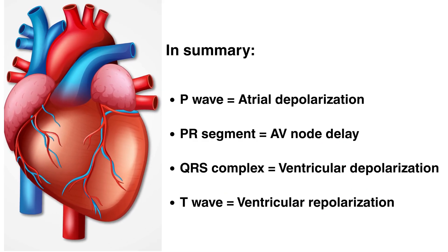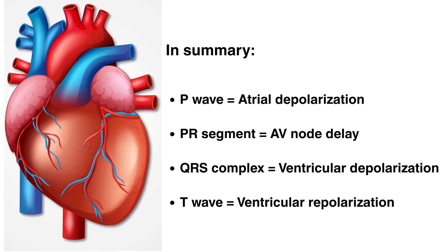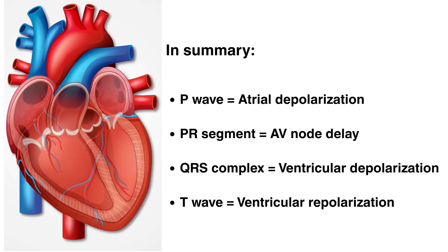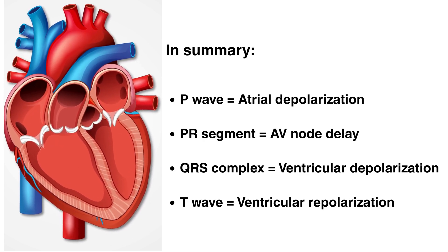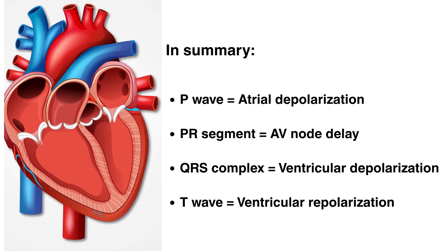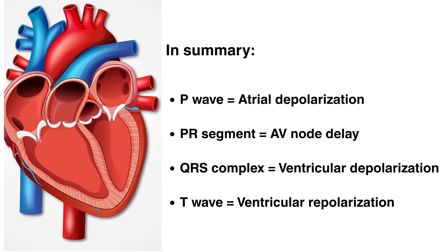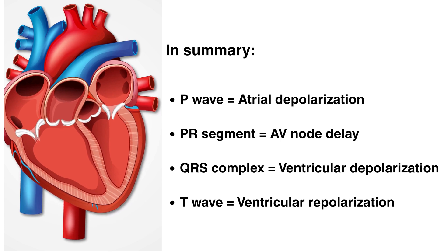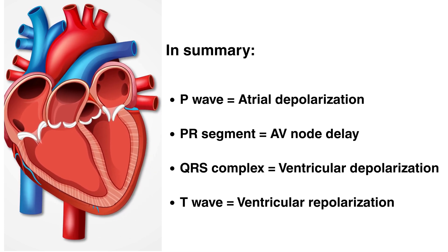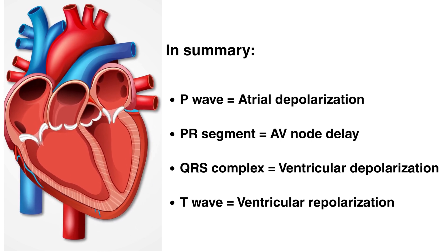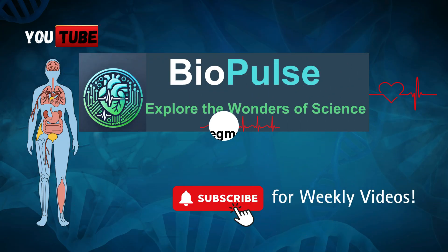In summary: the P-Wave represents atrial depolarization; the PR segment represents the AV node delay; the QRS complex represents ventricular depolarization; and the T-Wave represents ventricular repolarization. Thanks for watching — stay tuned for the next video in our cardiac physiology series.